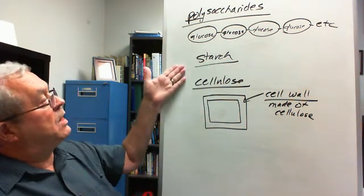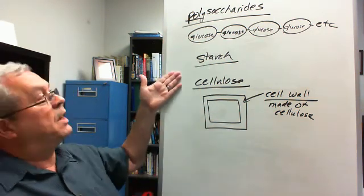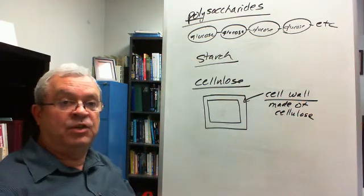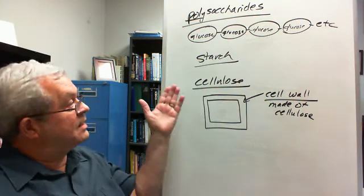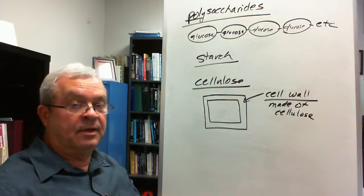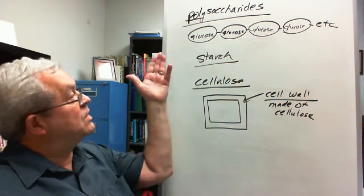So what's the difference in how these two pass through the pipeline? Starch is broken down into its individual glucose subunits. Cellulose is not. What is the difference? How come we can digest this one but not this one?